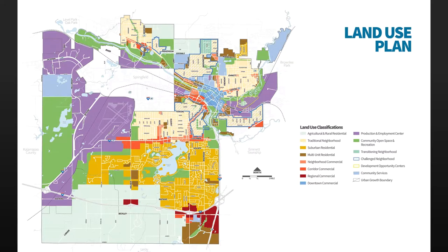They're not just colors on a map. We know that for designating an area commercial, we've done the market assessment to know there's enough commercial potential in the market. It's pretty disingenuous as a planner to just color a street red because it's a busy road and you want it to be commercial. The entire GIS stack — and this is what geodesign is to us — allows us to put a lot more spatial intelligence into the plans we're developing.